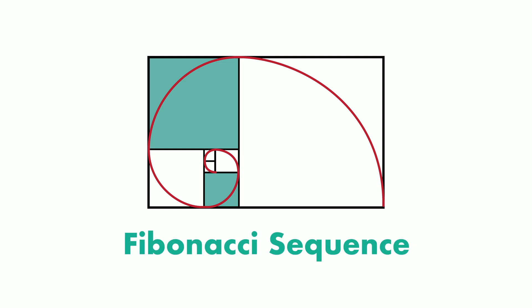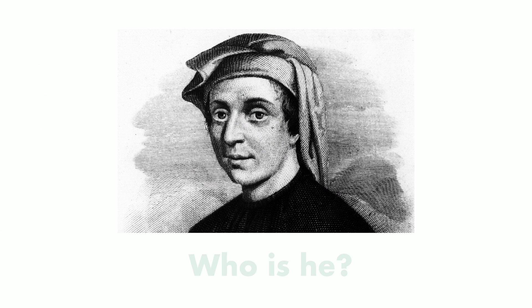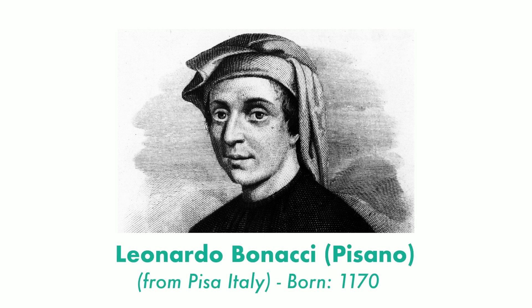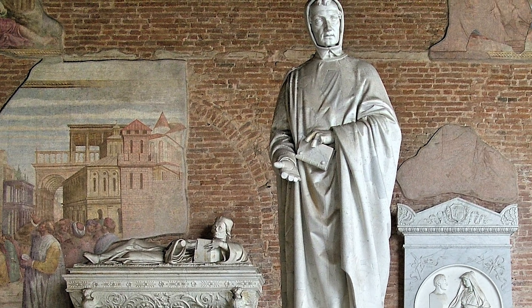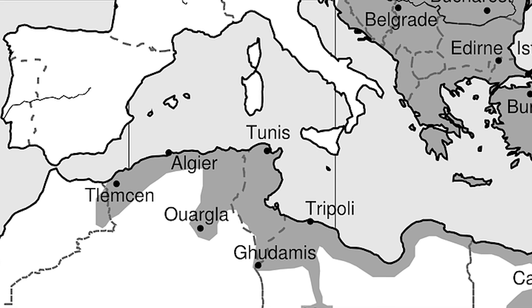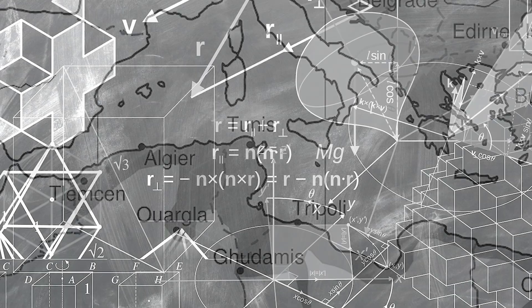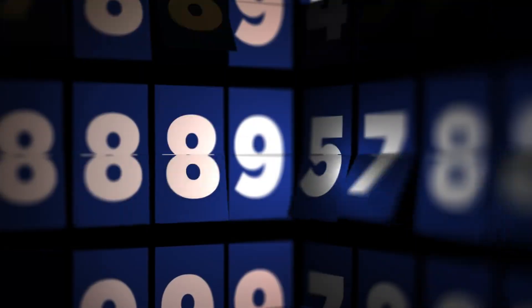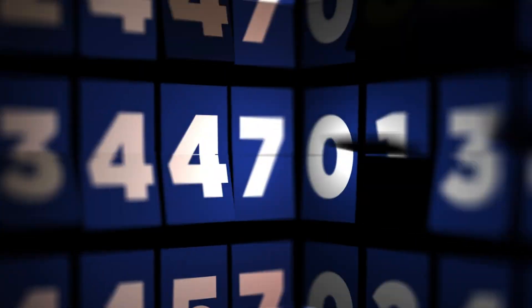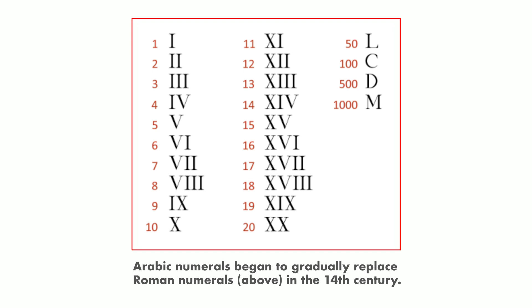But first of all, let me introduce you to Fibonacci. Who is Fibonacci? Fibonacci is also known as Leonardo Pisano or Leonardo of Pisa. He was one of the most renowned mathematicians of the Middle Ages. He grew up traveling North Africa with his father, learning about Arabic mathematics and especially the Hindu-Arabic numeral system, which we all use nowadays in the world, from 0 to 9.